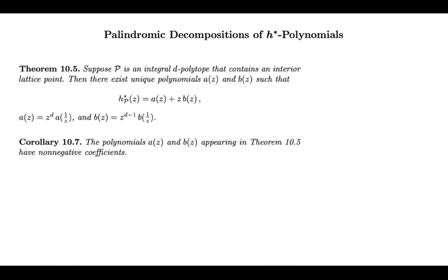Here's the result that I'm after. You give me an integral polytope, and for the time being I will assume that it contains an interior lattice point. Then we have a decomposition of the h-star polynomial — the numerator of the Ehrhart series — as a sum of two palindromic polynomials. You should convince yourself that this statement by itself is nothing special: you write it as such a sum, two polynomials both palindromic, and in fact this decomposition is unique.